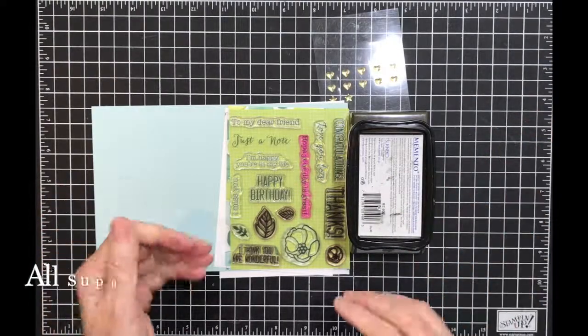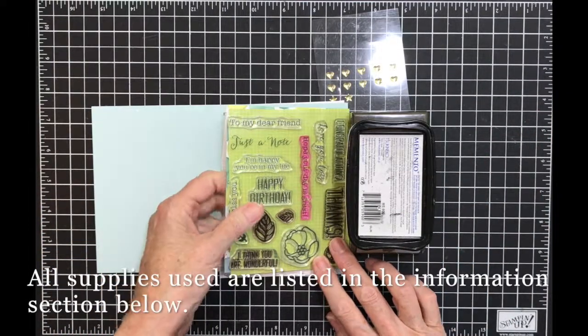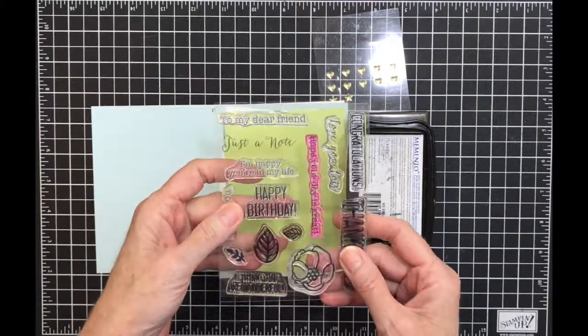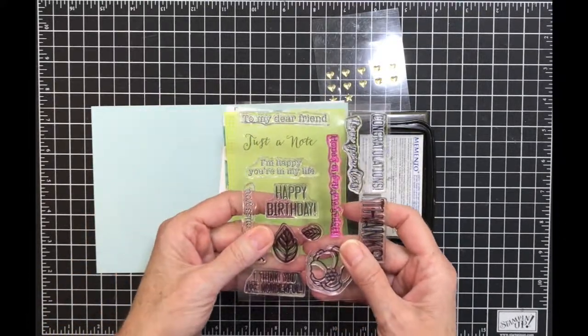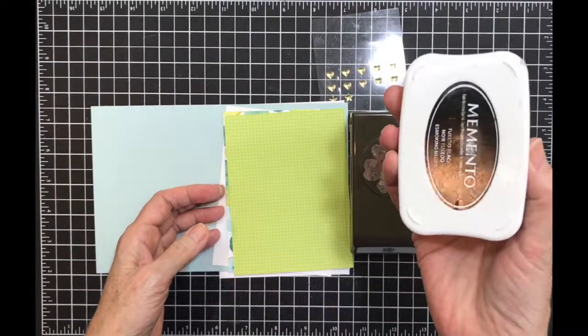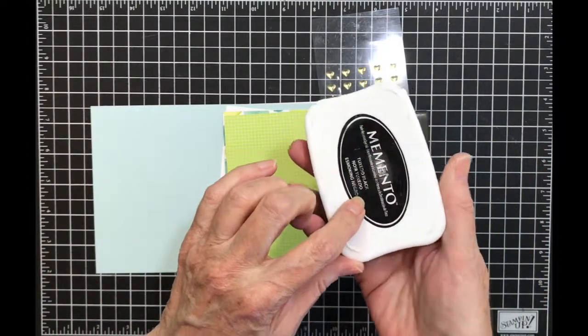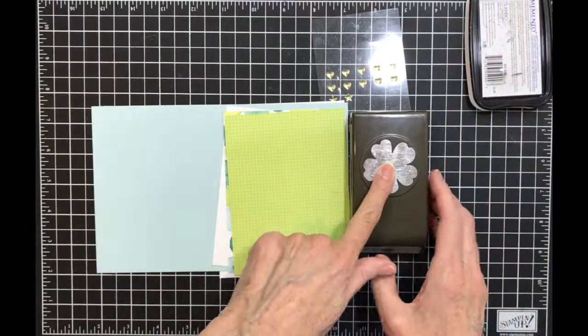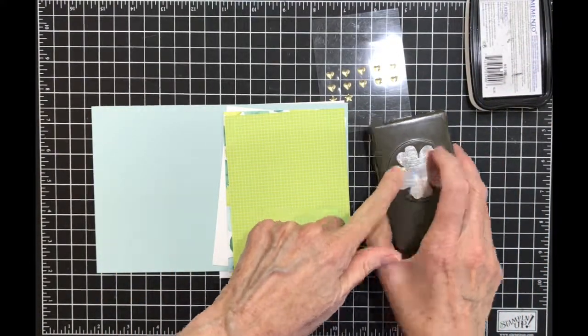Have a fun one today. I played around with an idea. I'm going to be using the stamp set from Soft Sayings card kit, specifically the Just a Note. I'm going to use Black Memento Tuxedo Black ink to stamp it with. I need my Pansy Punch.